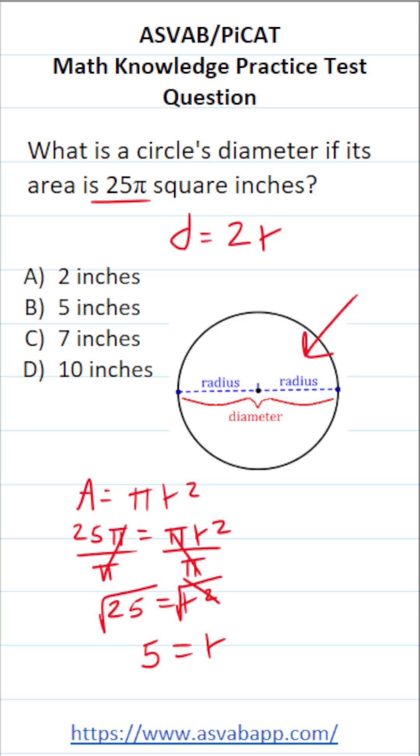We know what r is so let's go ahead and plug it in. This becomes d = 2 × 5, d = 10. So the diameter of this circle which has a radius of 5 and an area of 25π is going to be 10 inches.